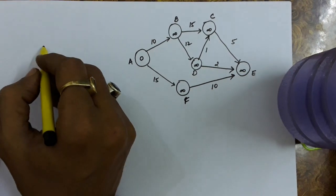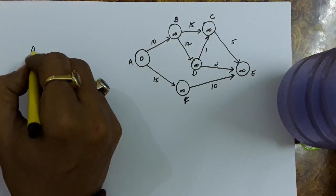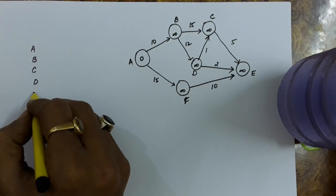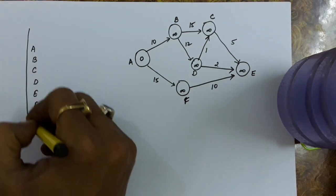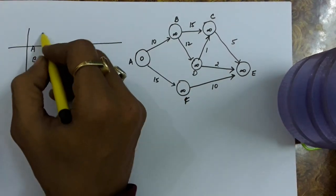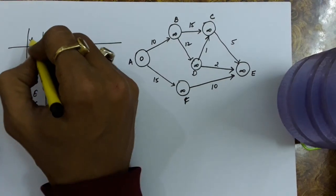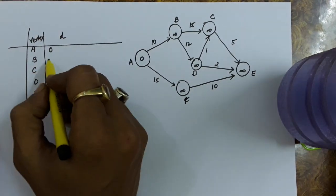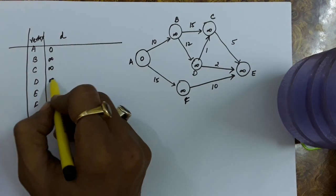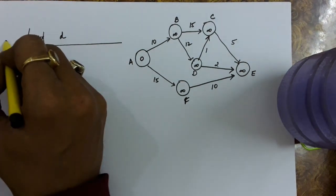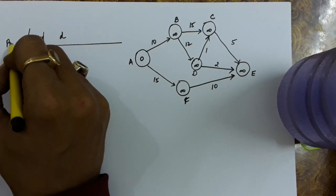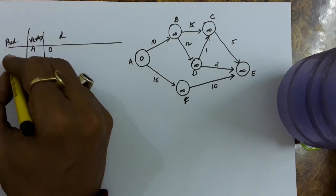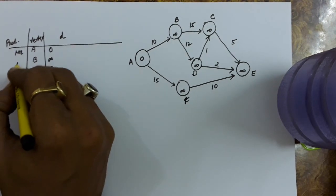We will insert all these vertices in the priority queue. So A, B, C, D, E and F are the vertices inserted in the priority queue. We will set up the distance: distance of A is 0 and distance of every other vertex is set as infinite. We will be taking the predecessors also, and every vertex has a predecessor nil initially.